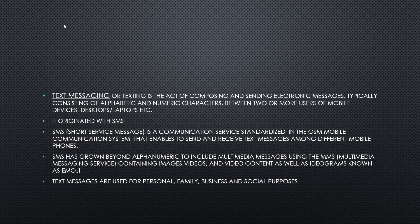The second type of messaging is text messaging or texting — it is the act of composing and sending electronic messages, typically consisting of alphabetic and numeric characters between two or more users of mobile devices or laptops. It originated with SMS — Short Message Service — a communication service standardized in the GSM mobile communication system that enables sending and receiving text messages among different mobile phones. SMS has grown beyond alphanumeric to include multimedia messages known as MMS — Multimedia Messaging Service — which contains images, videos, and video content as well as pictograms known as emoji. Text messages are used for personal, family, business, and social purposes.